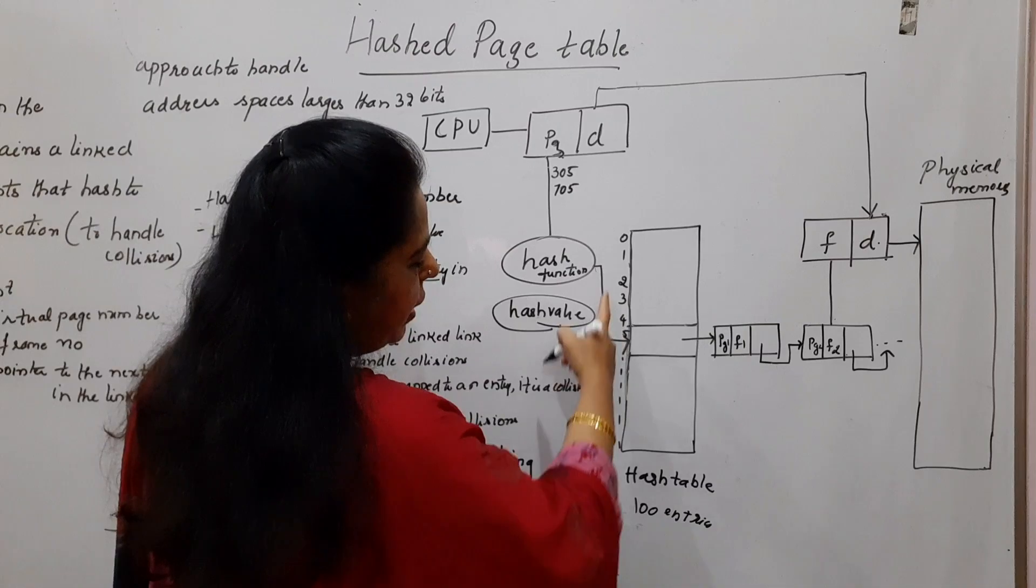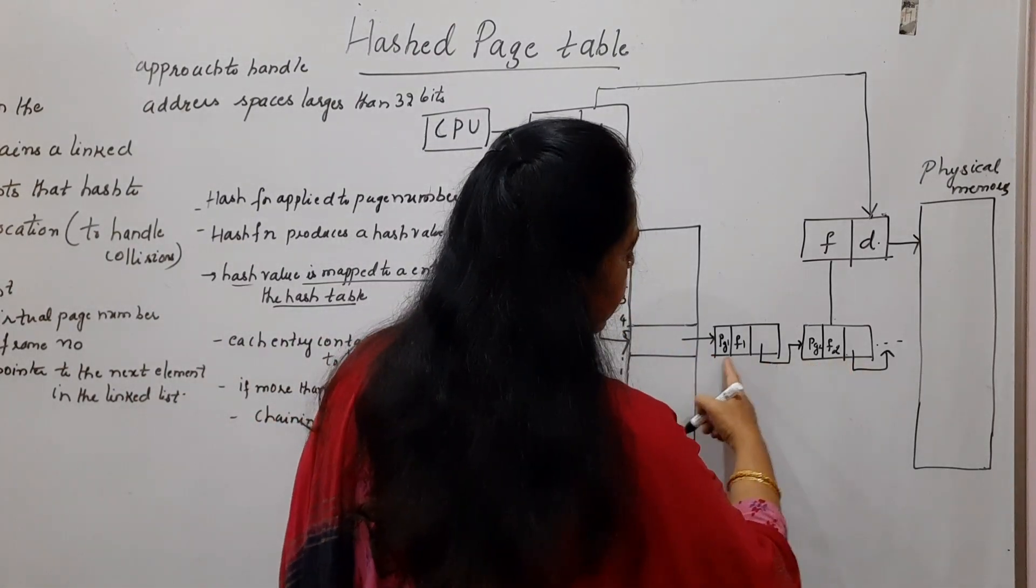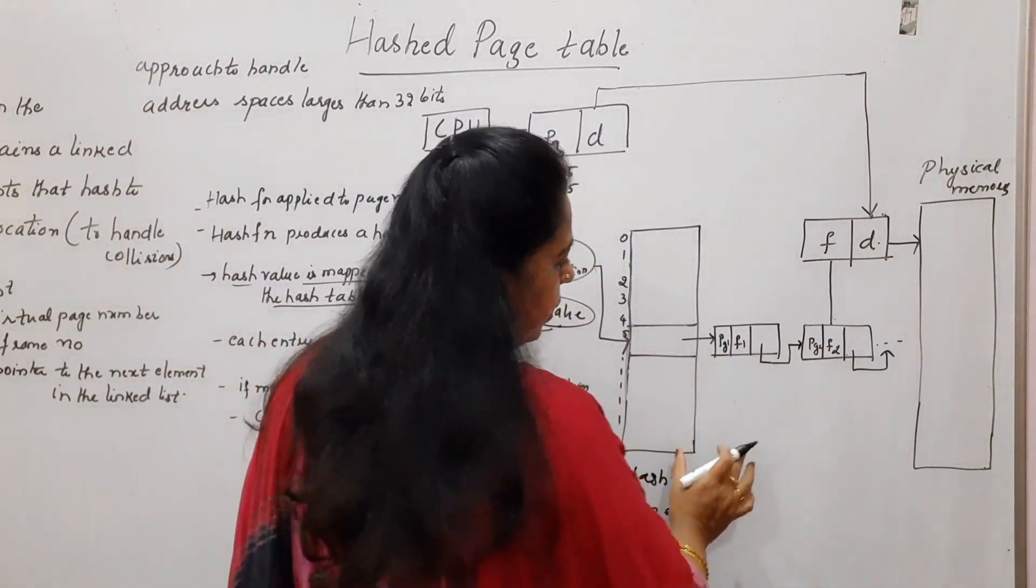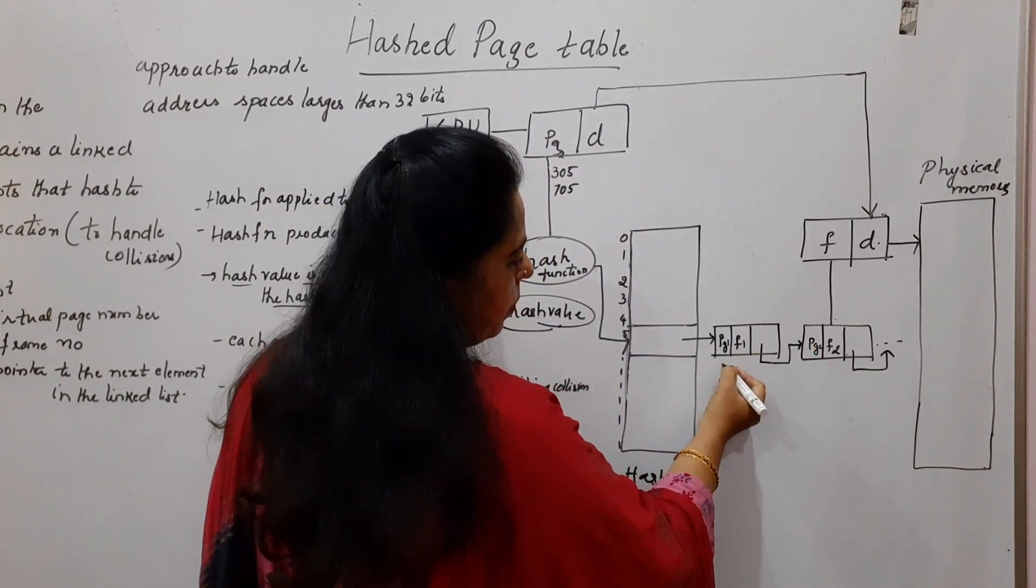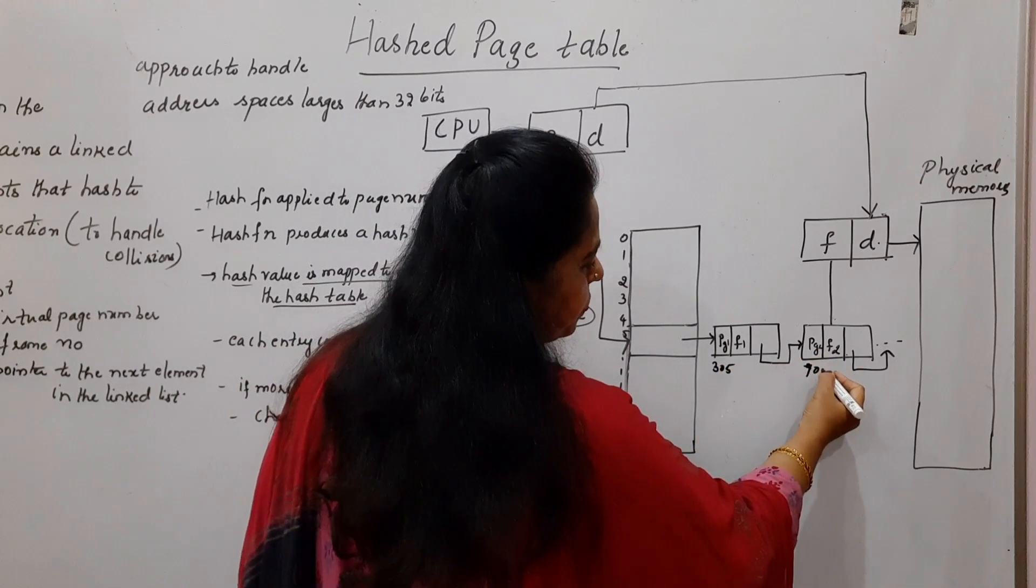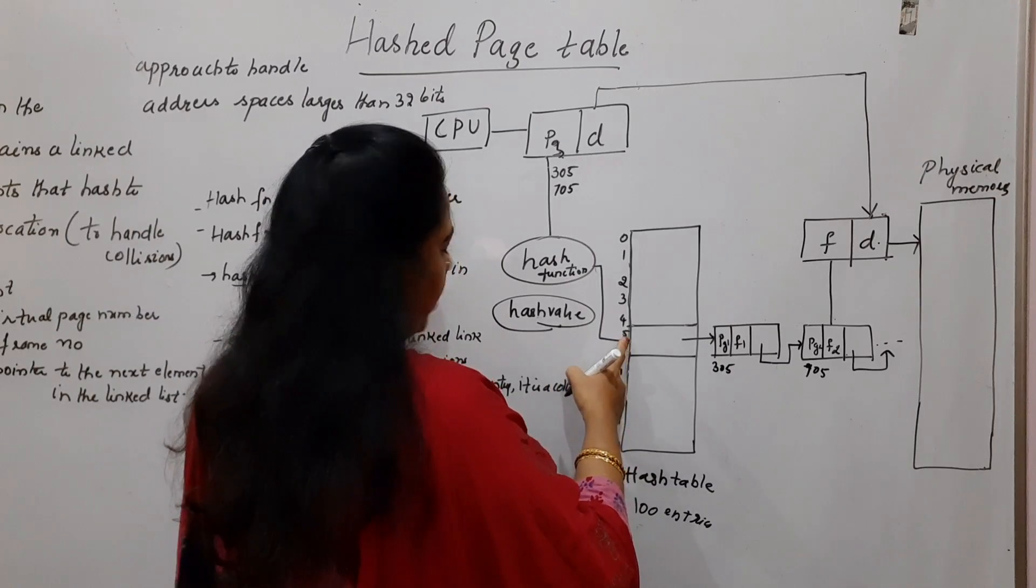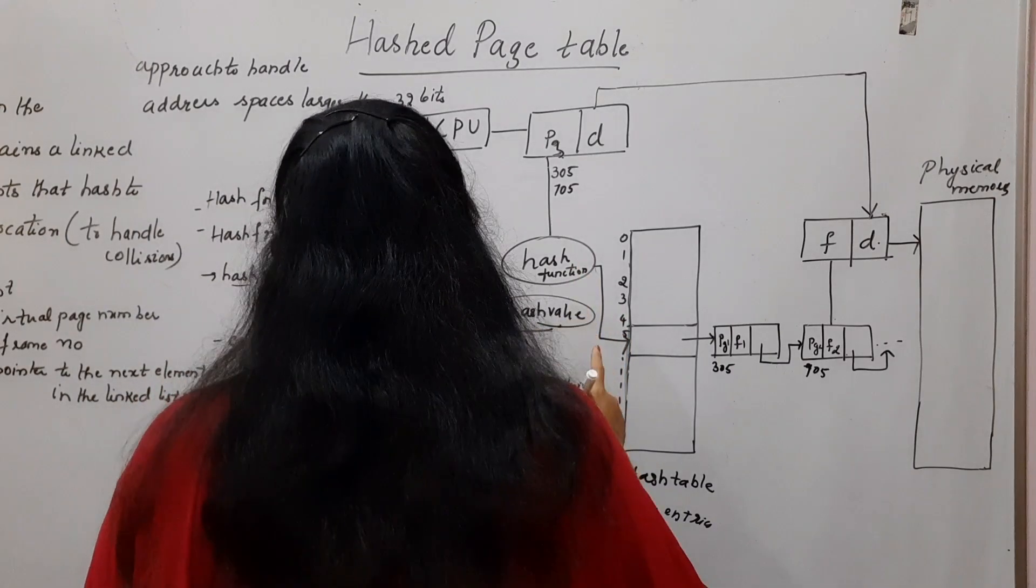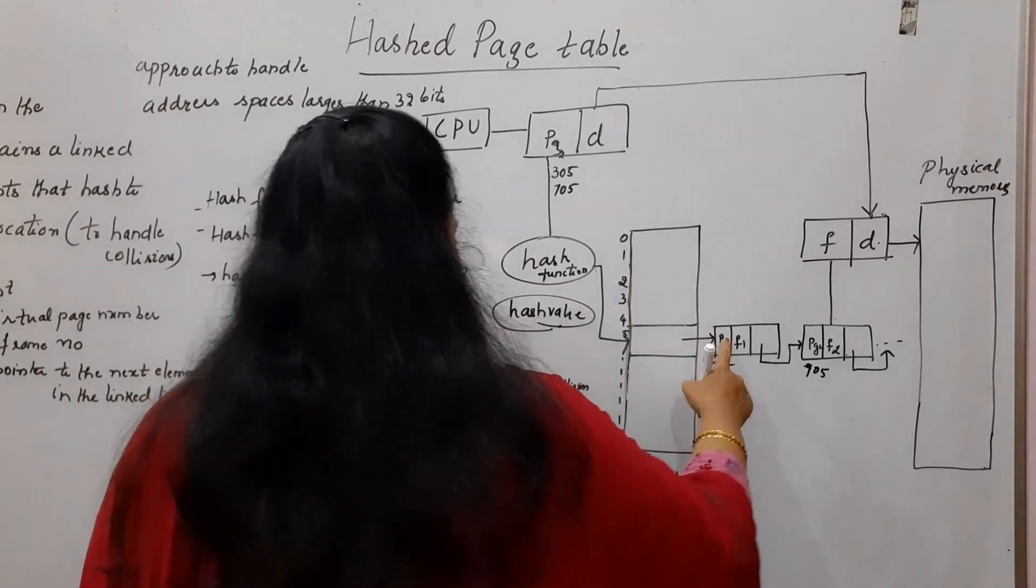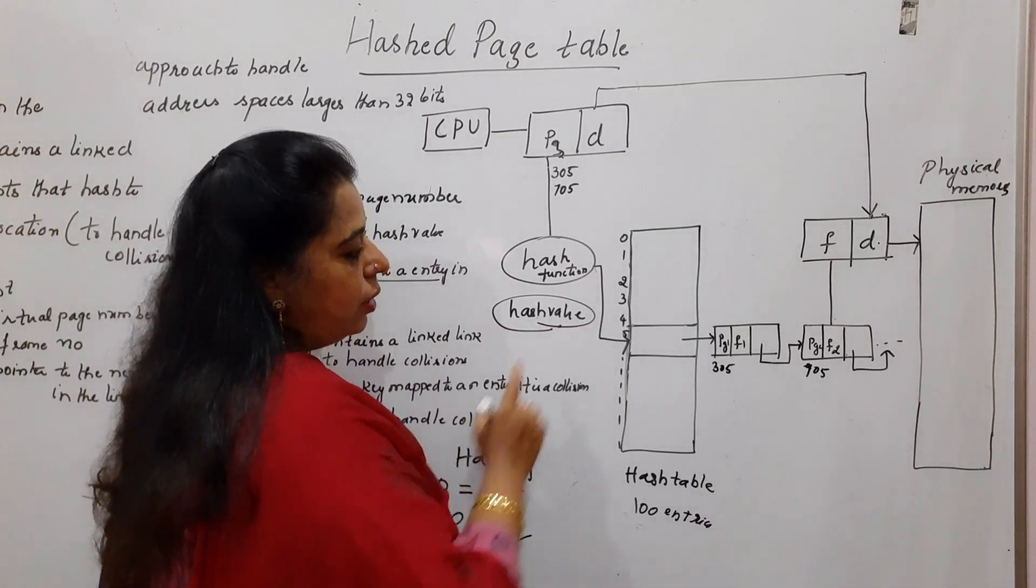When it is mapped to this hash value in the hash table, it is finding the different information about the different pages here. One is linked with the other. So that's why it is stored in the linked list. Suppose this page 1 can be of 305, page 2 is 705. If more than one key mapped to an entry, it is a collision. That's the reason you are making use of the chaining operation here to handle the collisions.